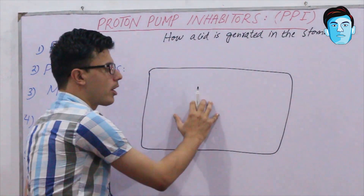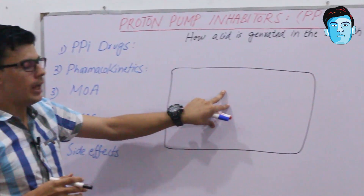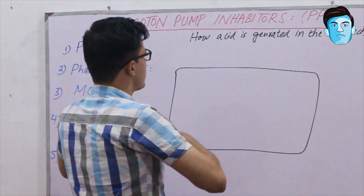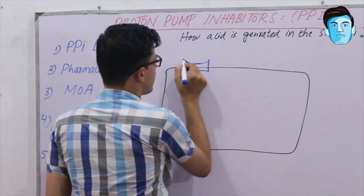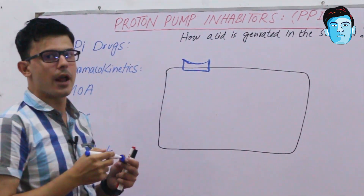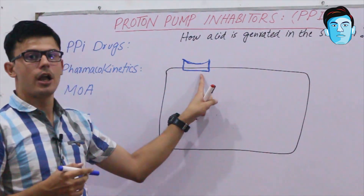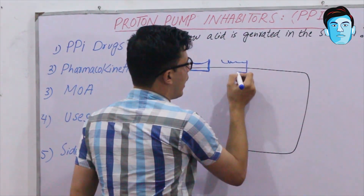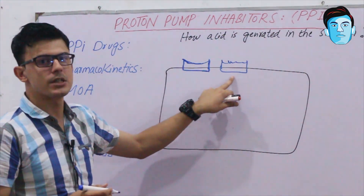On the inner surface of the parietal cell membrane, we have specialized receptors. On this inner surface, there is the H2 receptor, and there is also a gastrin receptor — which is more specific for gastrin — and another receptor as well.